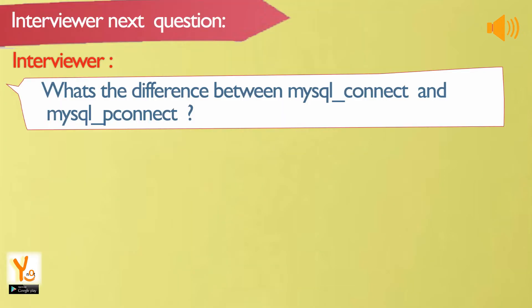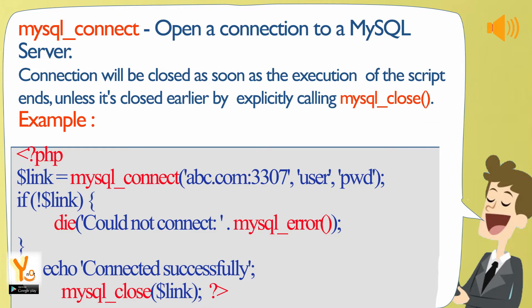What is the difference between mysql_connect and mysql_pconnect? mysql_connect opens a connection to a MySQL server. The connection will be closed as soon as the execution of the script ends, unless it is closed earlier by explicitly calling mysql_close.